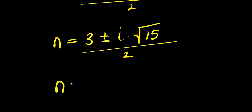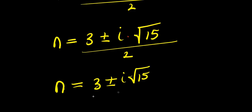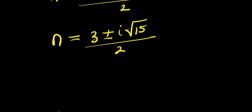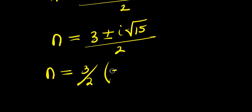From here, I can factor out 3/2: n = (3/2)(1 ± i√15).